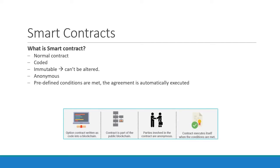When the predefined conditions are met, the agreement is automatically enforced by the code. Thus, there is no need for an arbitrator nor a third party to control or influence the execution.